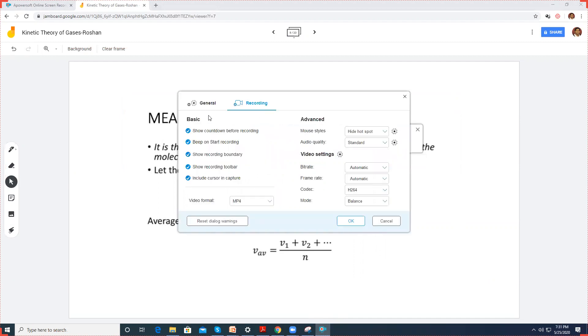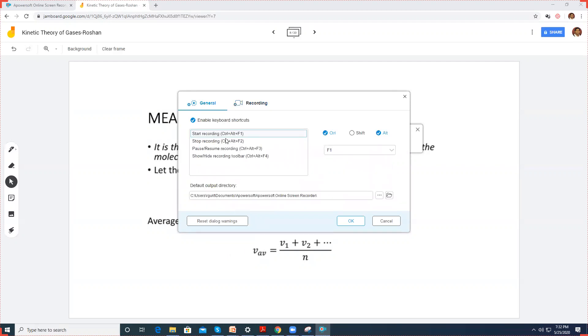So settings, it gives you a couple of settings. Show countdown before recording, beep on start recording, just to make sure that you are ready before you record. And the video format, you can save it in a couple of formats: MP4, AVI, MOV, MPEG. I am comfortable with MP4. So let me just save this in MP4. And you can also have shortcuts. And you can also choose your output directory where you want to save your recording.